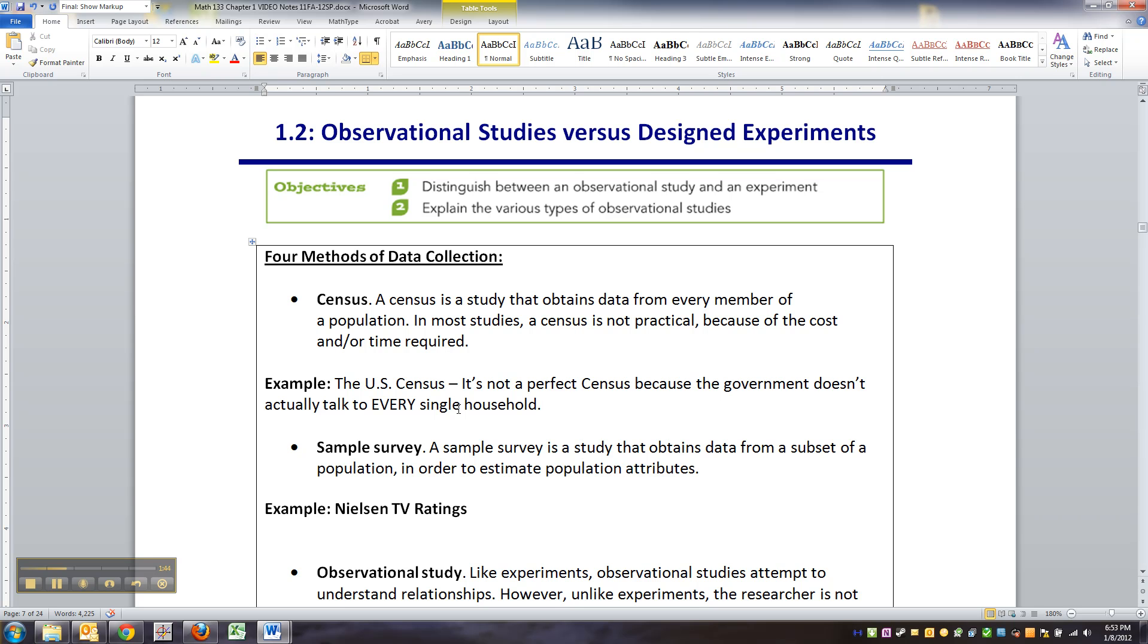Now, some things it's easy to take a census of. For example, if you're interested in a very small population, like all the people that are in Congress right now. Well, there's only 435 of them. You could get a hold of every single one of them. I mean, it'd be tough, but you could do it.